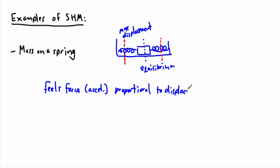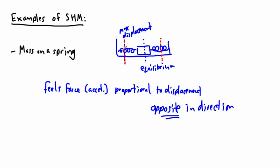In other words, if you take this thing and stretch it out to the left, it feels a force — and the more you stretch it, the more force it feels. And it's opposite in direction. So as you stretch this thing to the left, the force it feels is to the right. That's because the spring on that side is being stretched and wants to pull it back, and the other spring is being compressed, which also pushes it opposite. So basically, anytime you have simple harmonic motion, the force felt is proportional to the displacement.